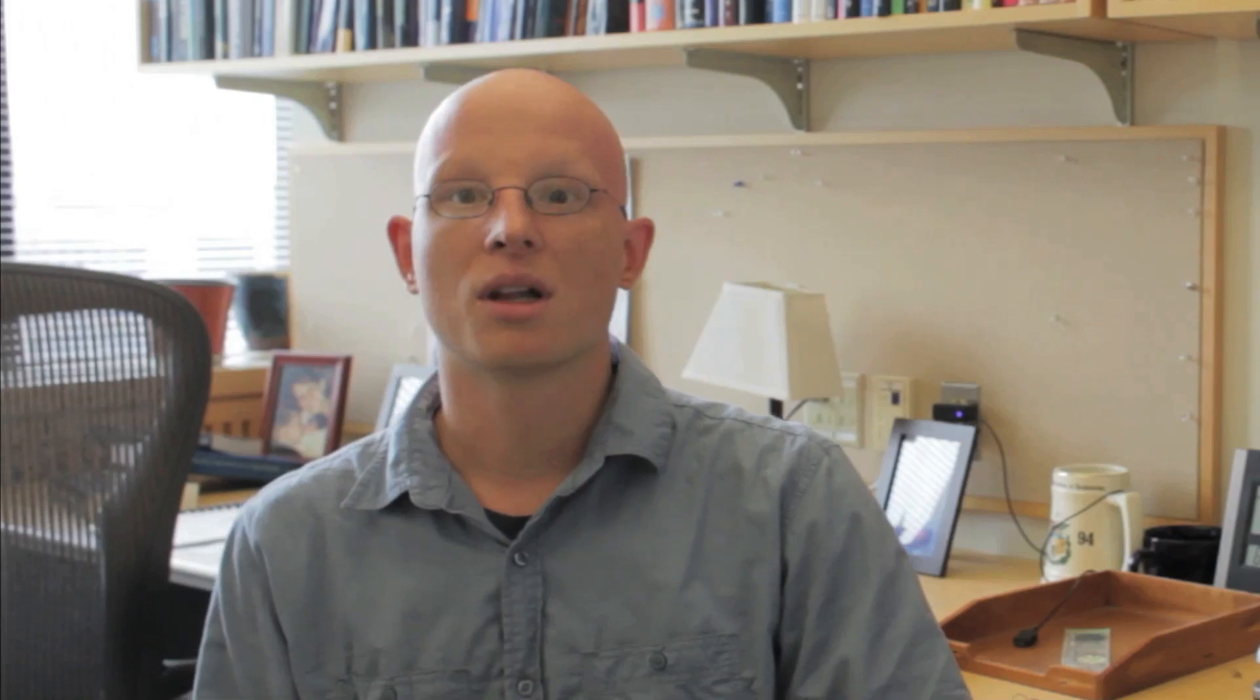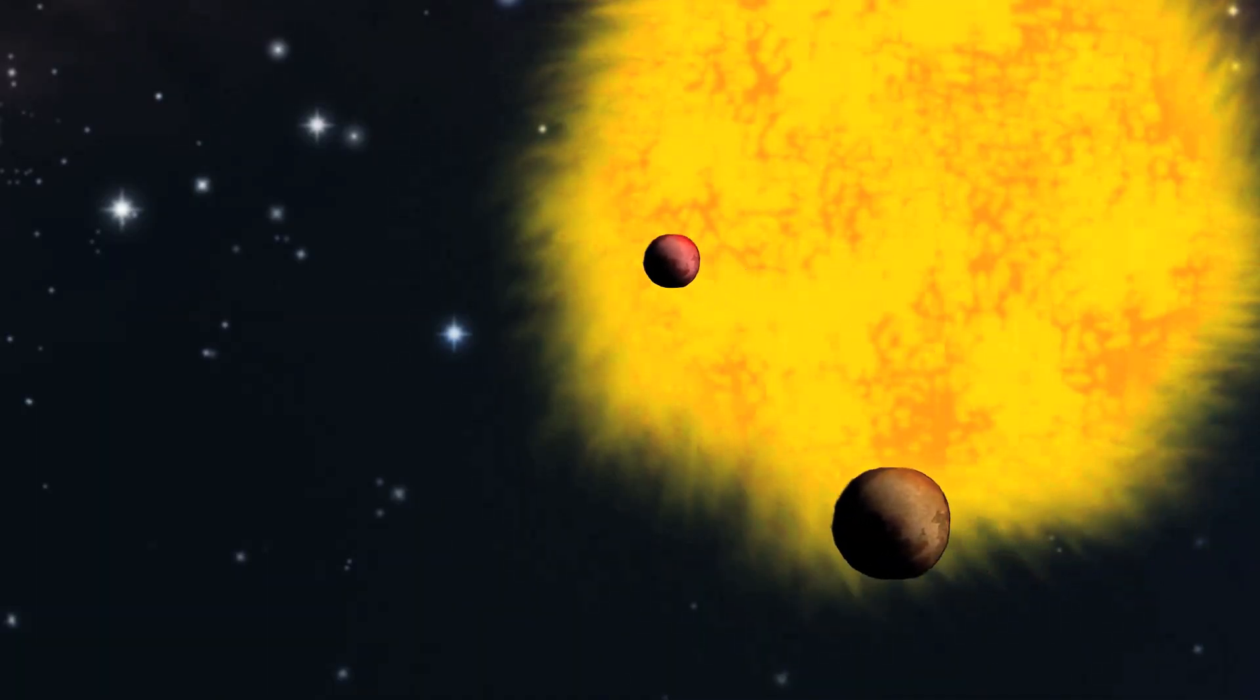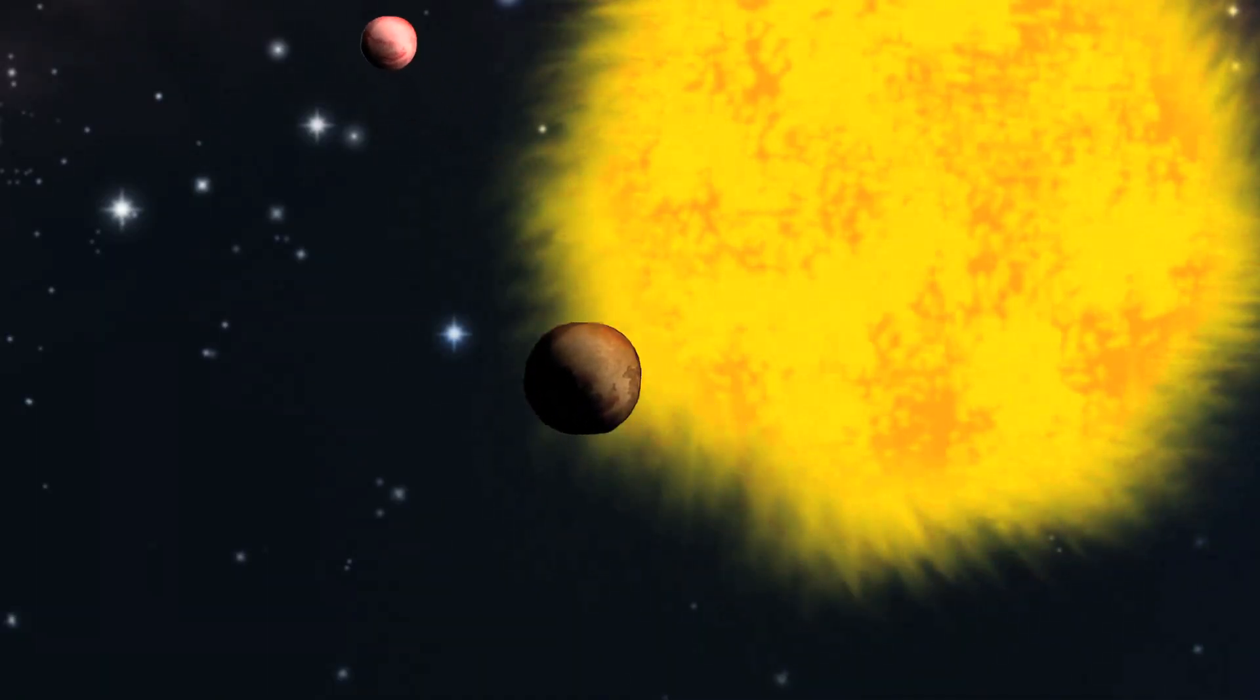And from how much light is blocked, we can infer the size of the planet. And from the radial velocity technique, we learn about the mass of the planet relative to the mass of the star, and also something about its inclination. So with respect to our line of sight, where is the orbit? And we can also learn about the shape of the orbit.